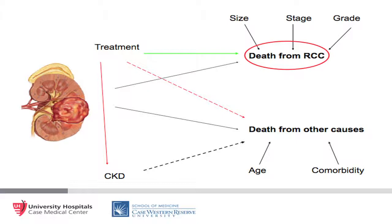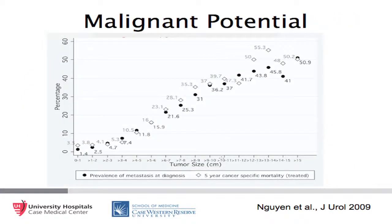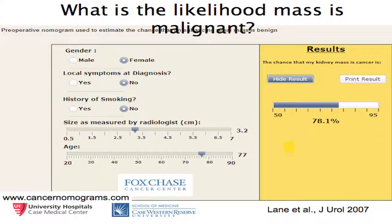The malignant potential of a tumor is directly related to its size, such that the larger the tumor, the higher the five-year cancer-specific mortality if it is treated. We can enter her information into a risk calculator, such as the one published by Lane et al. at the Cleveland Clinic. For a female with no local symptoms and no history of smoking, for a tumor of 3.2 centimeters at her age, her risk of having a malignant tumor is estimated to be 78.1%.